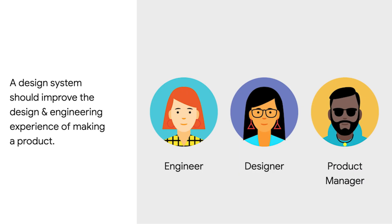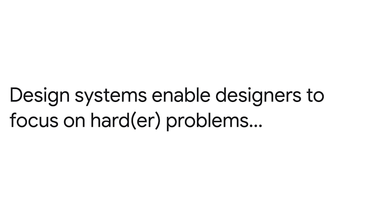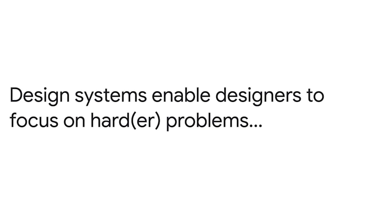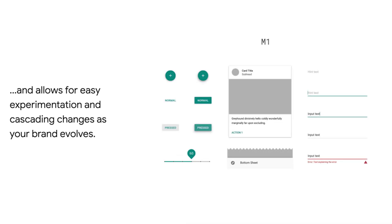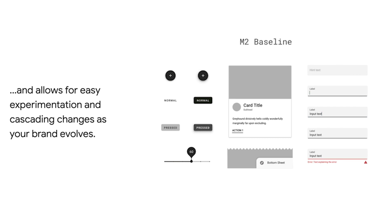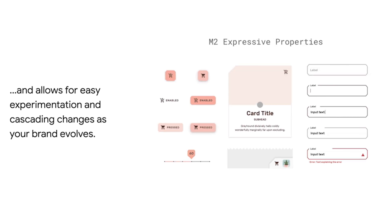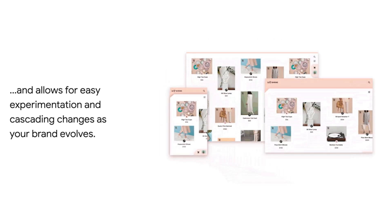Design systems are dynamic, evolving with your product. They improve the design and engineering experience by allowing designers and developers to focus on hard problems, reduce QA risk, offer consistency across all components used throughout a product, and allow for easy experimentation and cascading changes as your product evolves through various iterations.